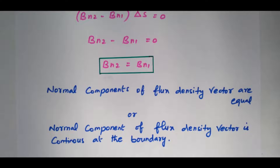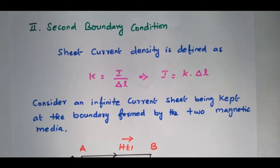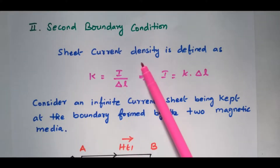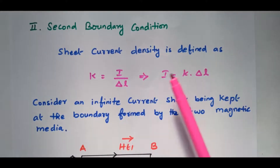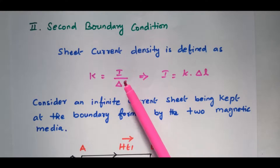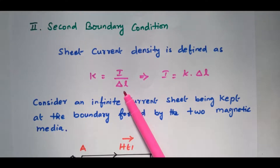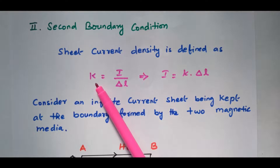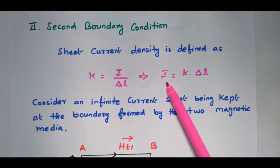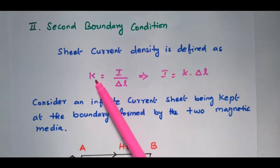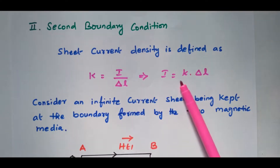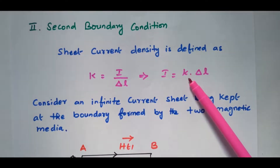Now we will go to the second boundary condition. Before that, we will see the sheet current density. What is sheet current density? K equals current per unit length, that is I divided by L. From that, I equals K into delta_L. This will be used in the derivation.